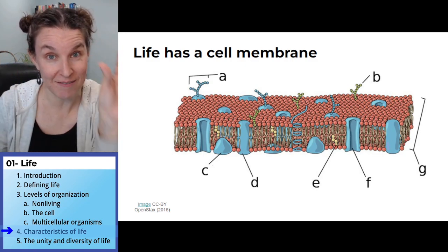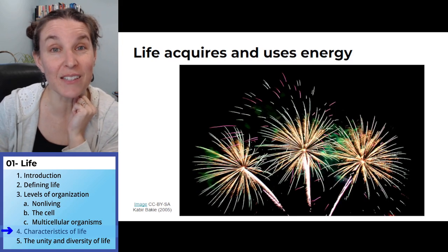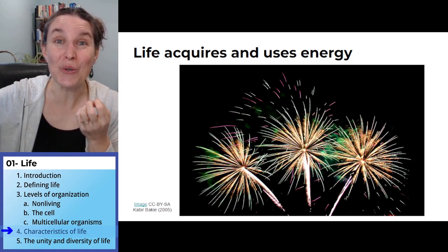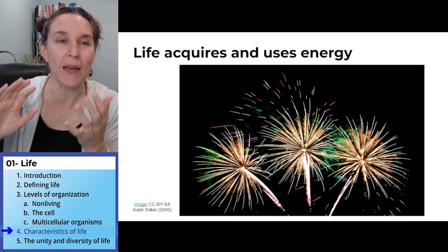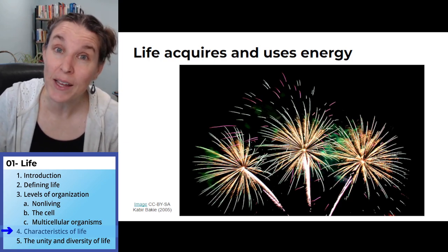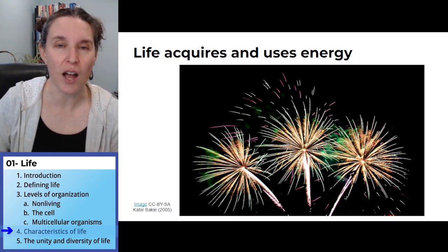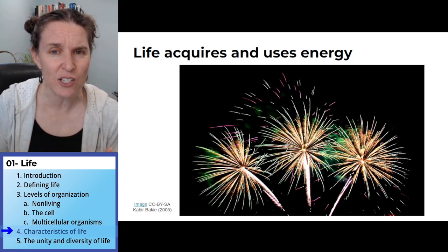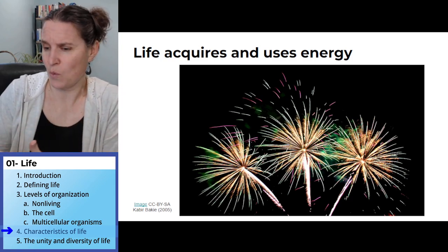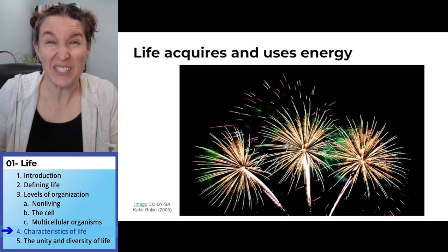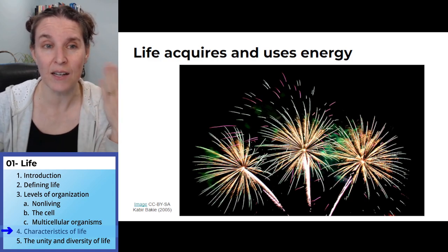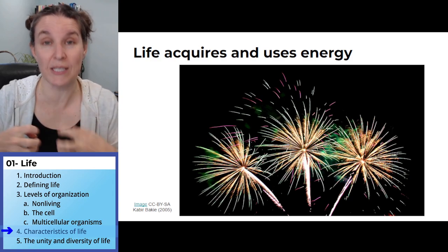Living systems get energy - they eat - and they use energy - they move. That's a very generalized example. We're going to spend three lectures talking about energy: what is energy, how do living systems get it, what do they do with it once they have it, and where does it ultimately come from? Fantastically, it comes from the sun. All living critters have to be able to get it and use it.